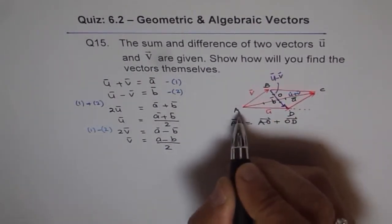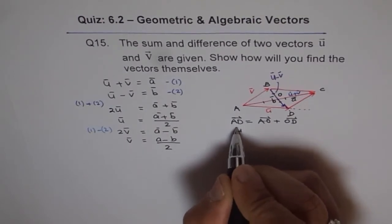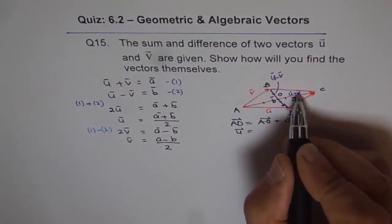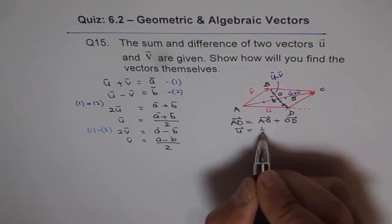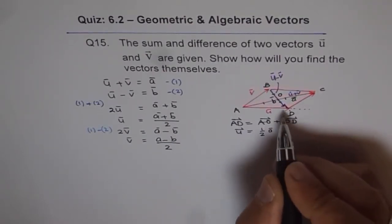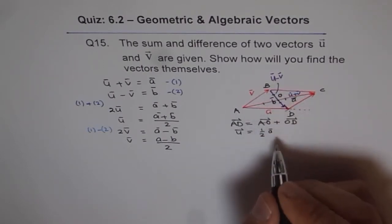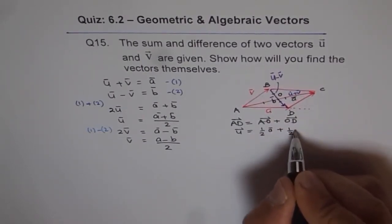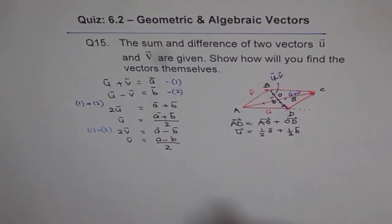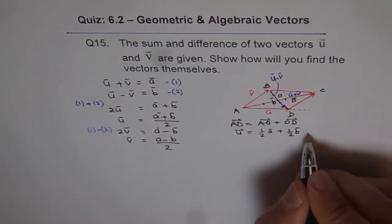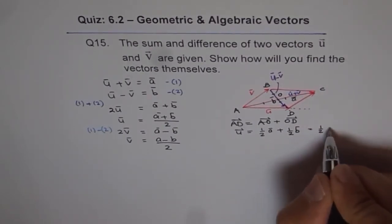o d is half of b d, that is half of u minus v, half of b. Do you see that? So straight away you get vector u is half of a plus half of b, that is half of vector a plus b.